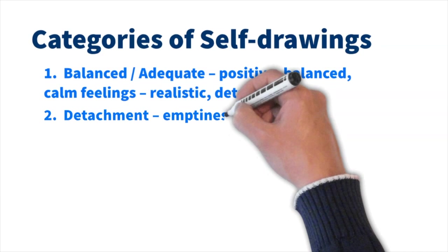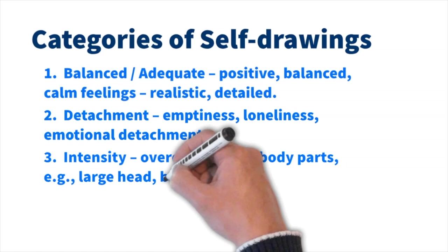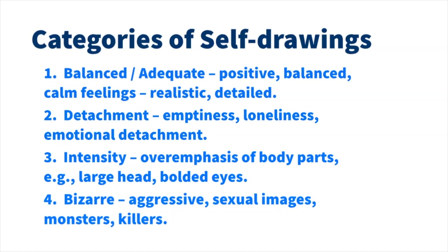Detachment, which refers to emptiness, loneliness, and emotional detachment. Intensity, which has an overemphasis of body parts, for example, a large head or bolded eyes. And fourth, bizarre, aggressive sexual images or monsters and killers.